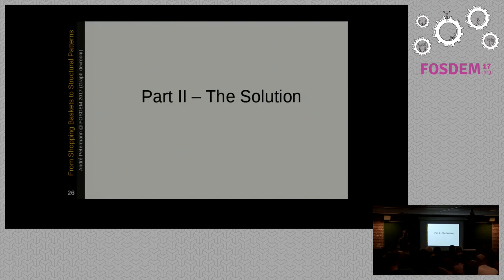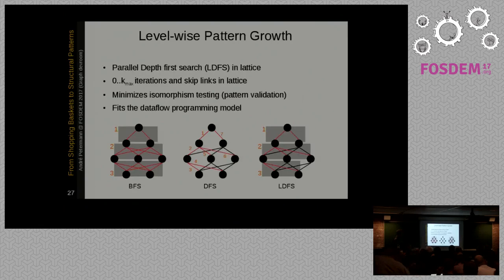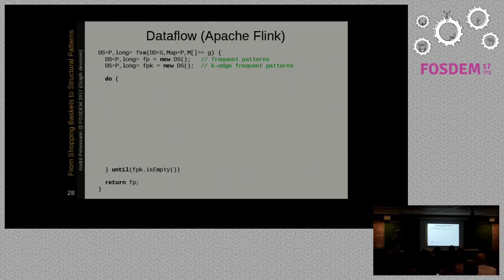Now this is everything you need to know about frequent subgraph mining and the research in the past. And now we are facing these problems in the context of distributed data flow systems on shared nothing clusters. And the solution to this problem is something we call level-wise pattern growth, which means we just do a parallel depth first search in the lattice. Which means we process the lattice level-wise, but still skip the links we do not want to visit, and still avoid the isomorphism problem due to... candidate generation, for example. And this means we only need K max iterations, which is the maximum edge count of the largest frequent pattern. And we can skip these links and we still minimize isomorphism testing. And this approach which fits the data flow programming model very well.